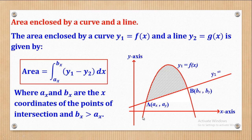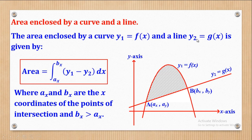You can see in this diagram: the curve y1 equal to f(x) and the line y2 equal to g(x) have two points of intersection, point A and point B. You get the x-values of those two points — this point is ax and this point is bx. Since bx is greater, the upper limit will be bx and the lower limit will be ax. Then you integrate the difference y1 minus y2.